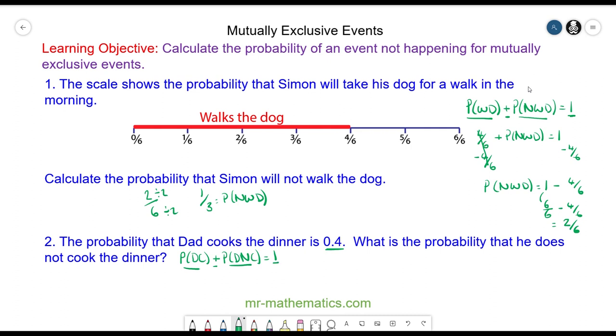We've been given that the probability of dad cooking is 0.4, so 0.4 plus the probability of dad not cooking will equal one. We can take away 0.4 from both sides. These will cancel, so we're left with the probability of dad not cooking equals one minus 0.4, which is equal to 0.6.